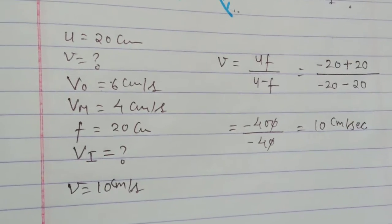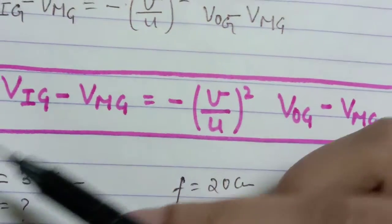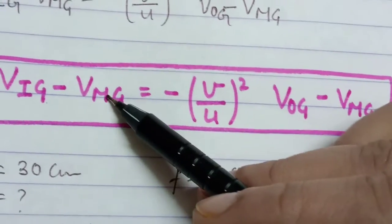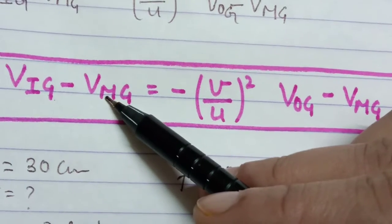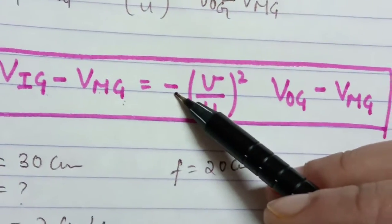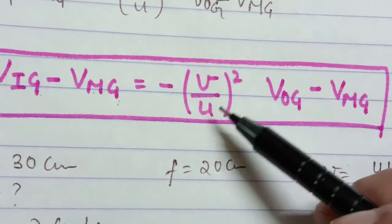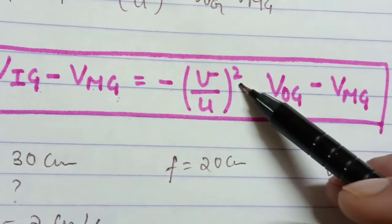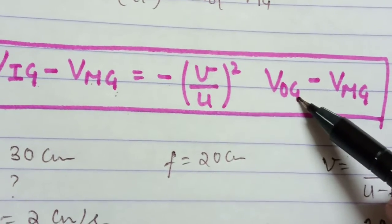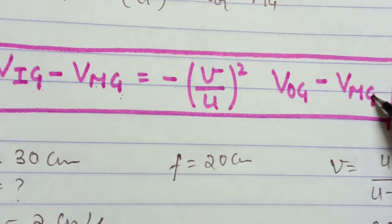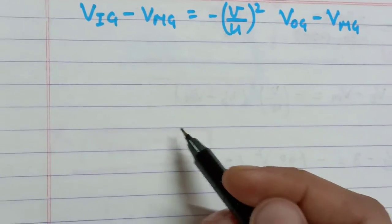Now I will give you the formula. The formula is: velocity of image with respect to ground minus velocity of mirror with respect to ground equals (distance of image / distance of object) squared, multiplied by (velocity of object with respect to ground minus velocity of mirror with respect to ground).